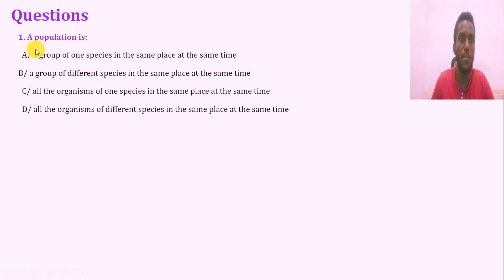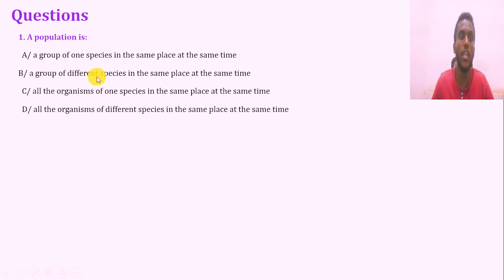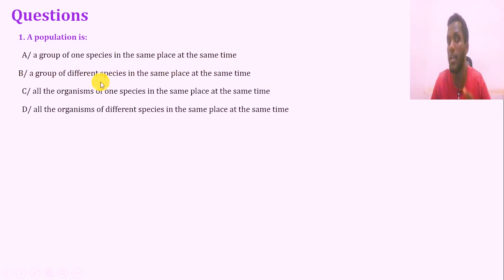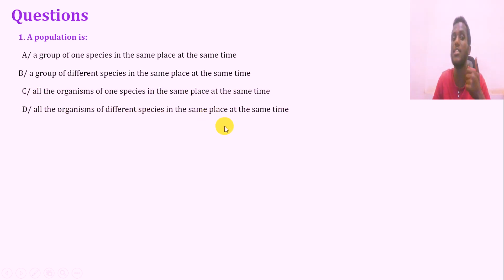Question number one: a population is, by definition — a. a group of one species in the same place at the same time; b. a group of different species in the same place at the same time; c. all the organisms of one species in the same place at the same time; d. all the organisms of different species in the same place at the same time.